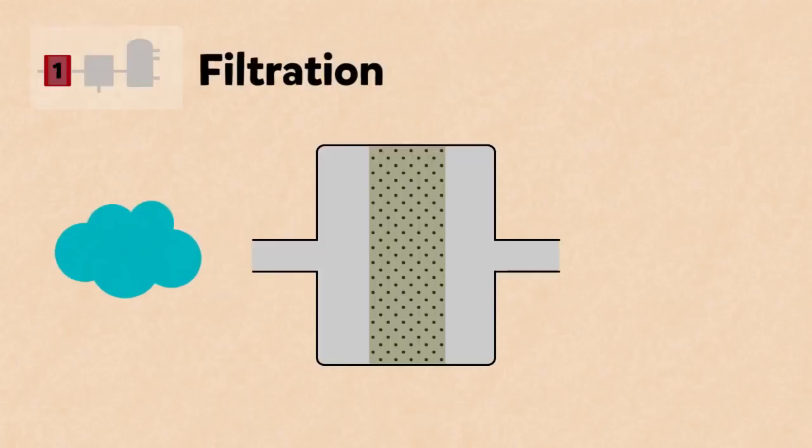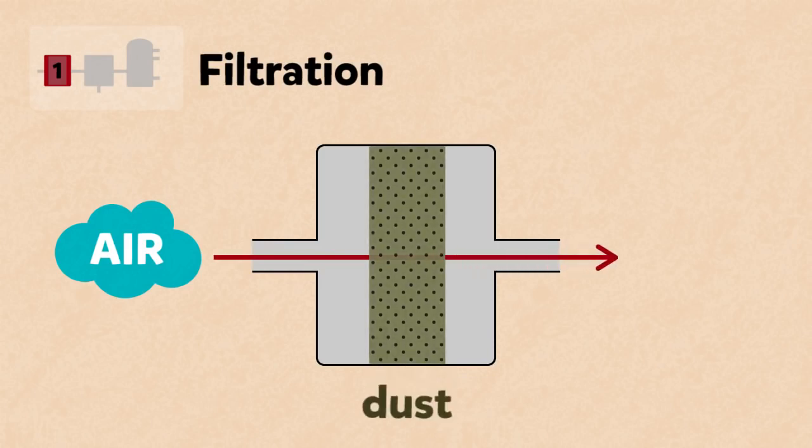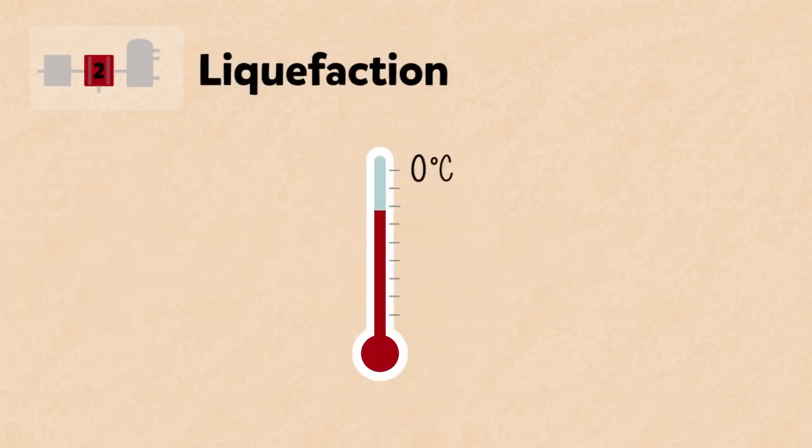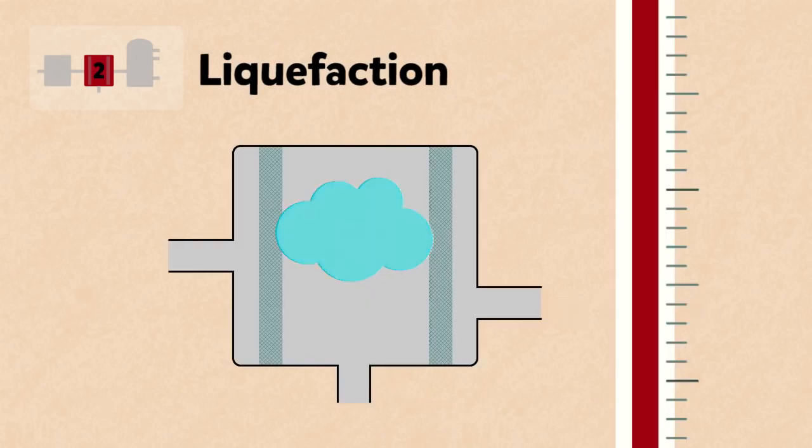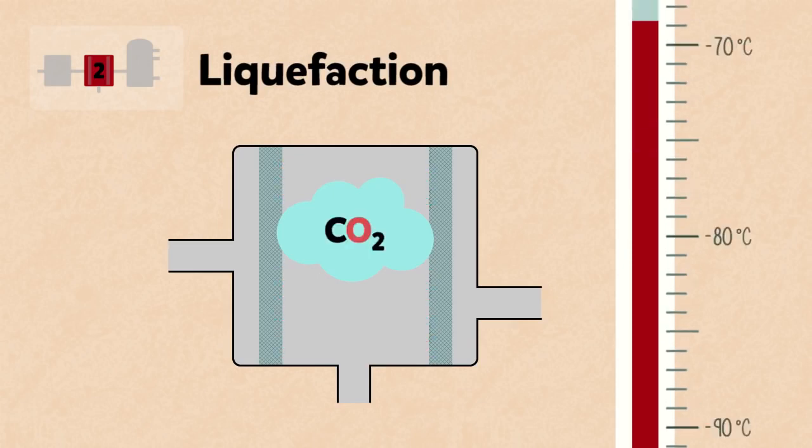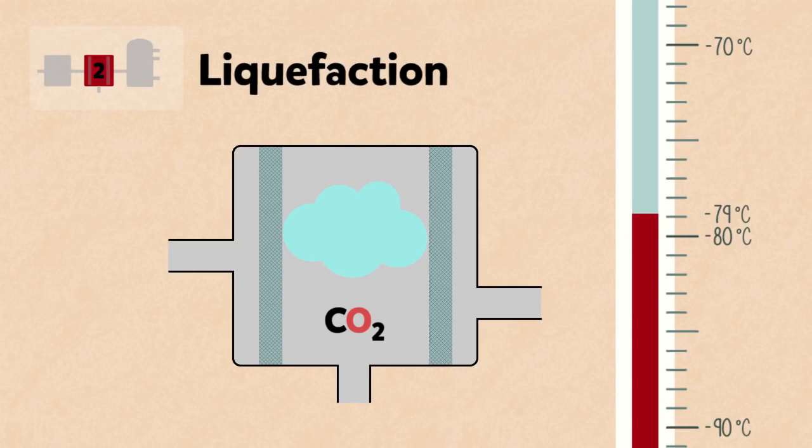Firstly, the air is filtered to remove dust. It is then cooled in stages to minus 200 degrees Celsius at which temperature air is a liquid. As it is cooled, water vapour condenses and is removed by absorbent filters. Carbon dioxide is then removed at minus 79 degrees Celsius when it freezes.